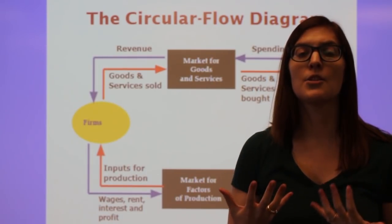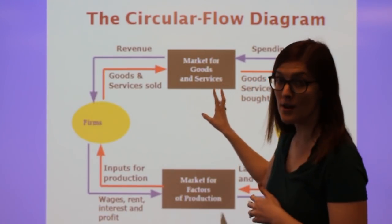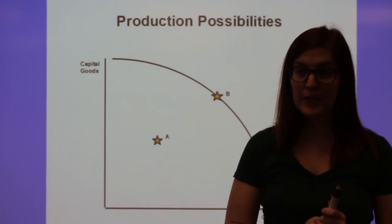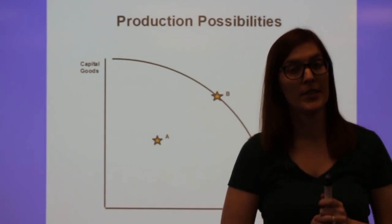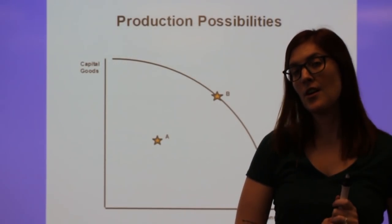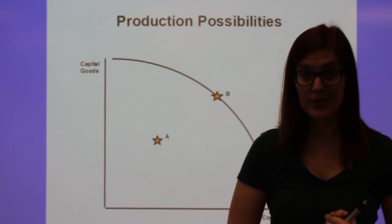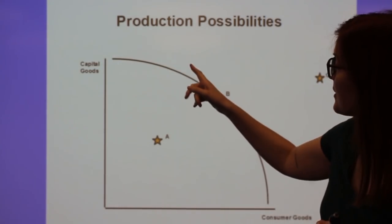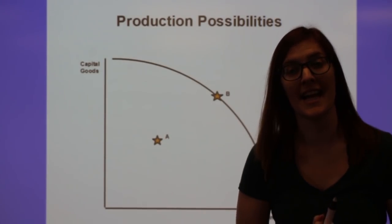So this class will look at both markets, but predominantly the product market. The next graph we learned was the production possibilities curve. I had drawn the most common macro version of this curve with a bowed out line and also with capital and consumer goods on the axes.